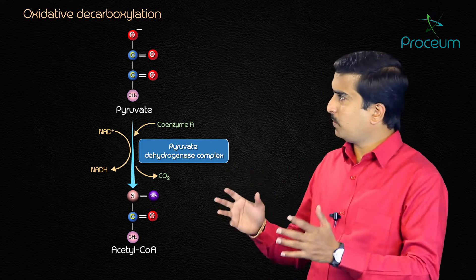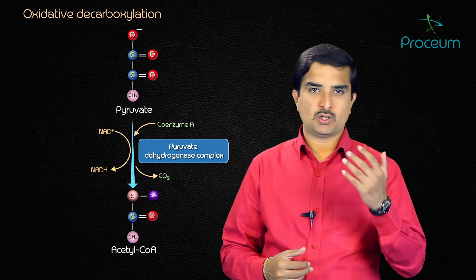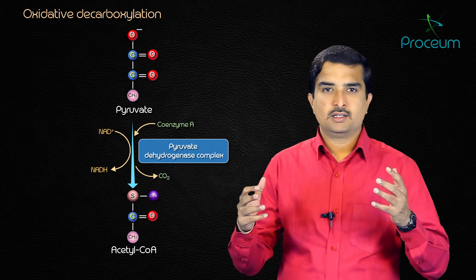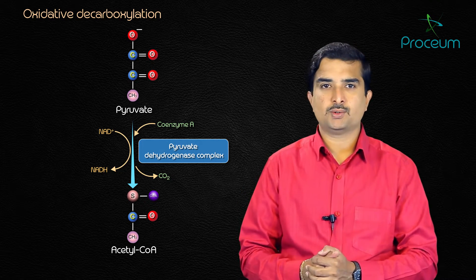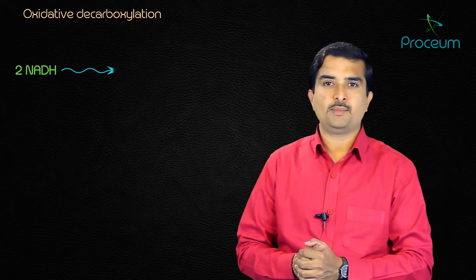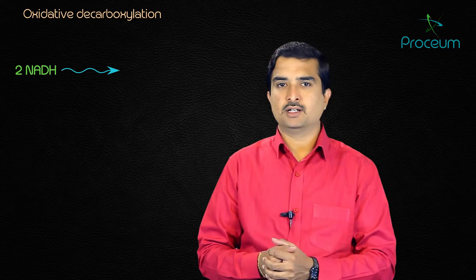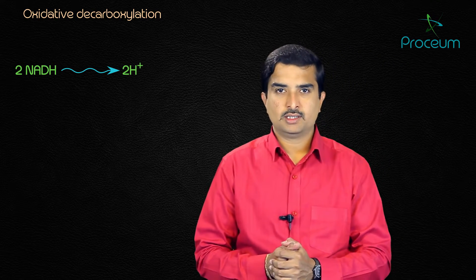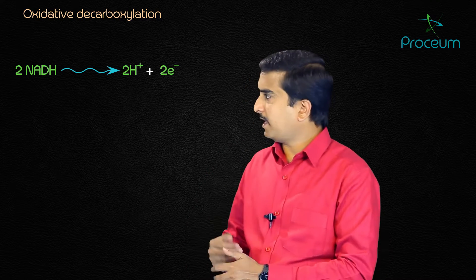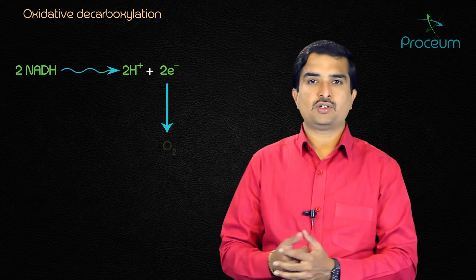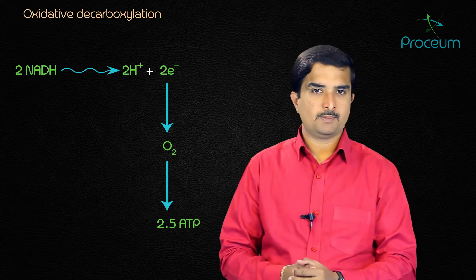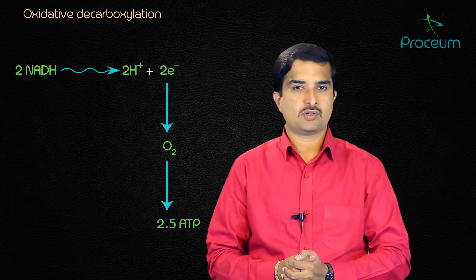Pyruvate is converted into acetyl-CoA by pyruvate dehydrogenase in a reaction called oxidative decarboxylation. The NADH formed in this reaction gives up a hydride ion with two electrons to the respiratory chain, and these electrons ultimately transfer to oxygen, generating 2.5 ATP per NADH molecule.